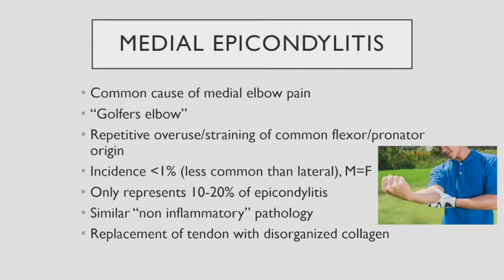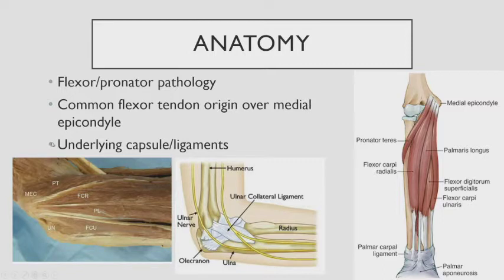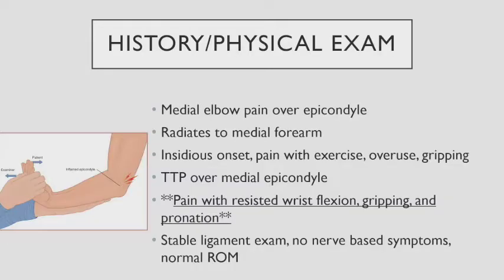Medial epicondylitis — golfer's elbow — is very similar in general principles but it's a tendinopathy of the common flexor origin, much less common than tennis elbow, representing only about 10 to 20% of the epicondylitis spectrum. The medial epicondyle has a bunch of muscles, plus the ulnar nerve — the funny bone nerve — that comes behind it. It's more responsible for flexion and pronation. On history and physical, patients have medial pain radiating over the epicondyle down to the forearm, insidious onset, tenderness over the medial epicondyle, and pain with resisted flexion, gripping, and pronation. I put my hand on their wrist with the elbow extended and say flex against resistance — they complain of pain right over the medial epicondyle.